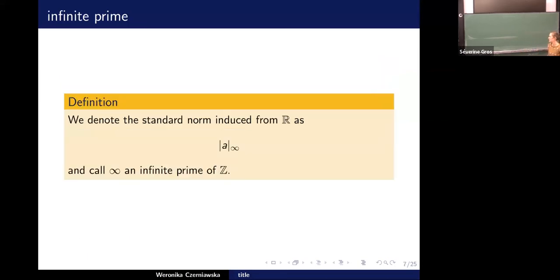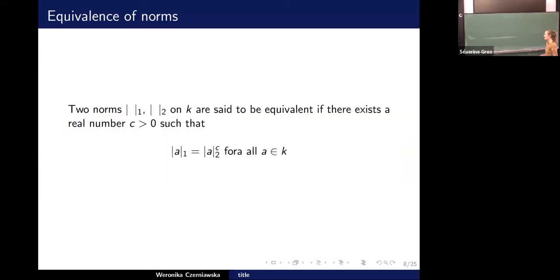And we also have the norm, basically the standard, the most standard norm ever known on rational numbers or real numbers, we're going to denote it as absolute value at infinity. And now, this definition of the equivalence of norms, we actually needed to have certain uniqueness in the next theorem that I'm going to say.